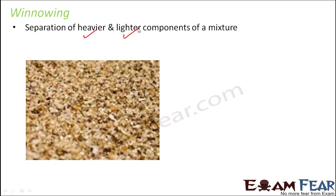So when you have two types of components which may be size-wise and texture-wise appear a little similar, but weight-wise one is heavy and the other one is light — these kinds of materials can be very well separated by winnowing.